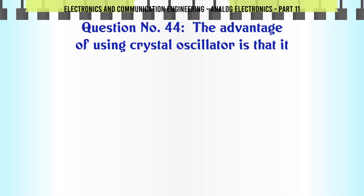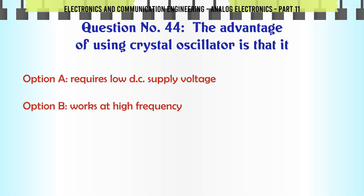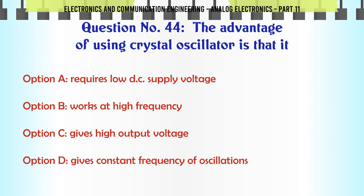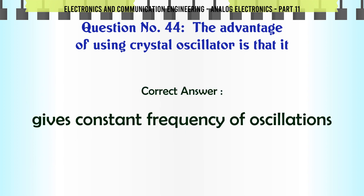The advantage of using a crystal oscillator is that it. A. Requires low DC supply voltage. B. Works at high frequency. C. Gives high output voltage. D. Gives constant frequency of oscillations. The correct answer is: Gives constant frequency of oscillations.